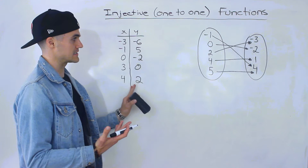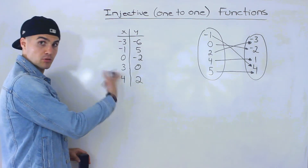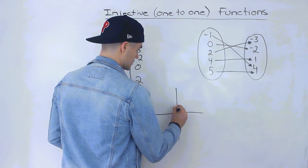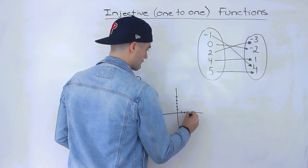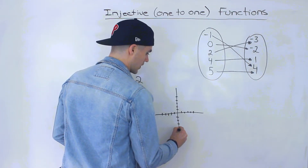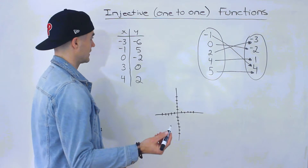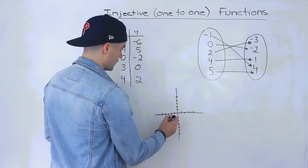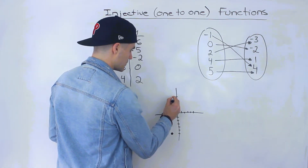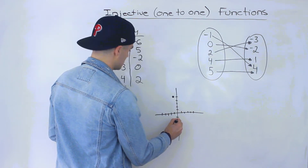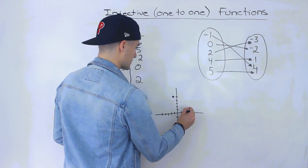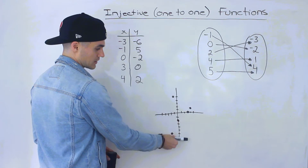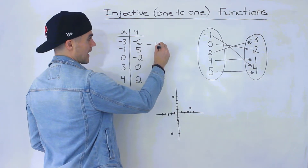What about functions given as a table or mapping diagram? One approach is to plot the points and run the horizontal line test. For example, with points (-3, -6), (-1, 5), (0, -2), (3, 0), and (4, 2), plotting them shows no two points share the same y-value, so no horizontal line touches two points simultaneously. This is a one-to-one function. You can also just check the table directly — all y-values are unique, confirming it's one-to-one.